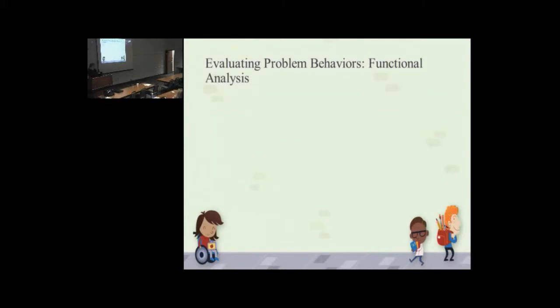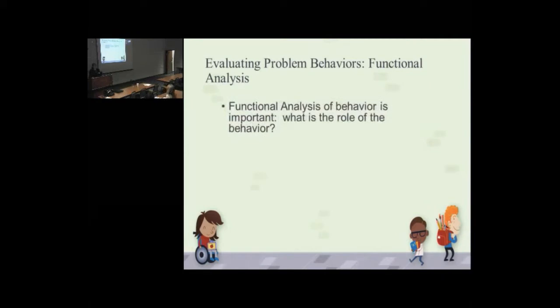So the stuff we talked about before is a way to set the stage through transitions and use of attention for limiting the number of problem behaviors you see. The next thing is, you're going to have problem behaviors anyway. These are kids we're dealing with. They're human beings. We're none of us perfect. You're going to have problem behaviors. And so once you have problem behaviors, it's very important to evaluate problem behaviors specifically in terms of what the function of the behavior is.